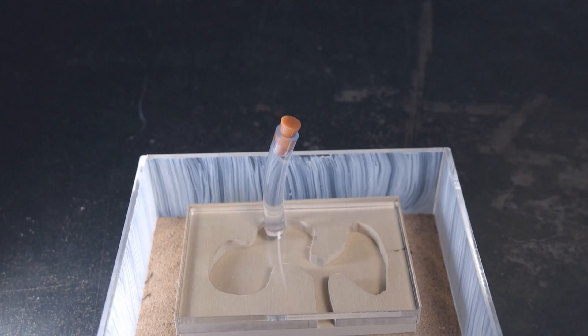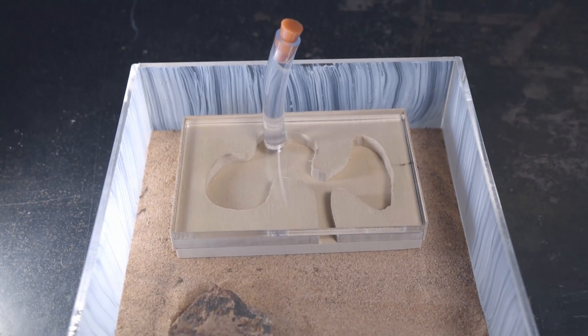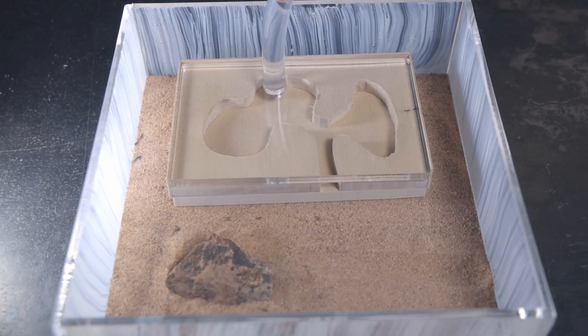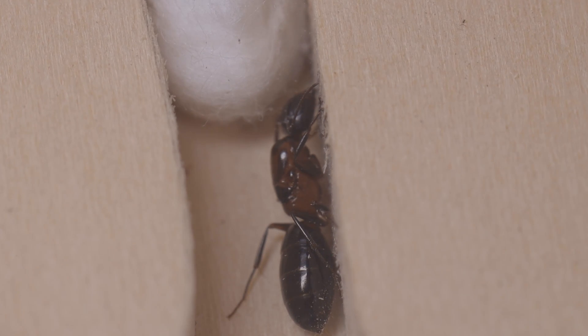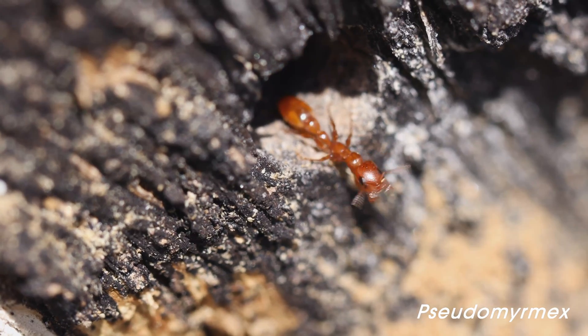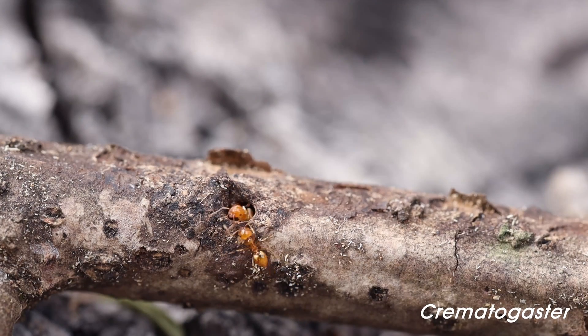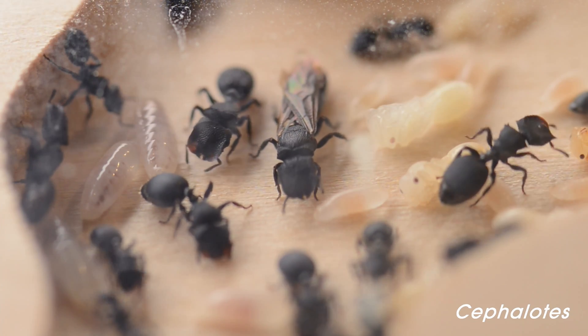Today I'm going to be demonstrating how to build a fairly simple wooden formicarium. Now wood ant nests don't work for every ant species. They're primarily for ants that are either arboreal or they live in fairly dry cavity nests. This includes some species within the genera Pseudomyrmex, Camponotus, Chromatogaster, Cephalodes, just to name a few.